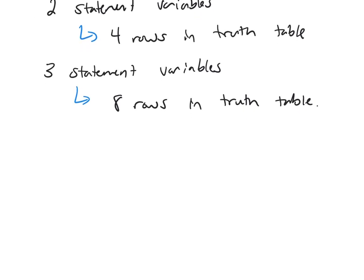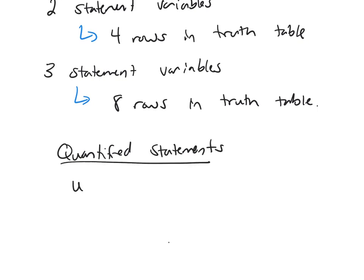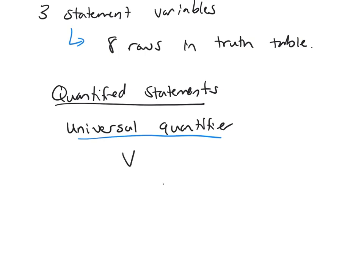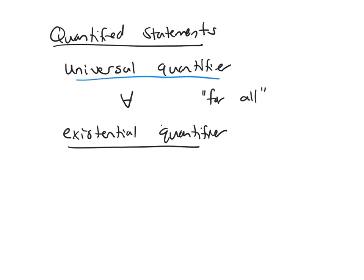After truth tables, we looked at quantified statements — those are the ones with quantifiers in them. We have two types of quantifiers: the universal quantifier, which has the symbol that looks like an upside-down A and means 'for all,' and the existential quantifier, which is a backwards E and means 'there exists.'